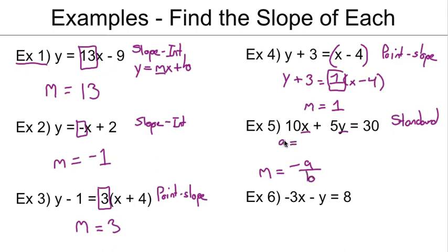a is the coefficient of x, so in this case 10, and b is the coefficient of y, in this case positive 5. So if I take the opposite of a, that would be -10, over b, which is 5. Negative 10 divided by 5 is -2.